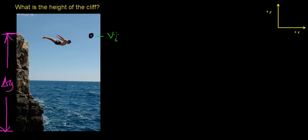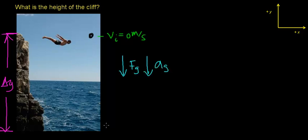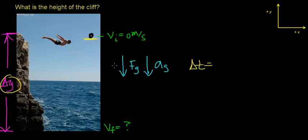What you want to do is release this object from rest, because you want to know what the object's initial velocity is. The force of gravity is going to accelerate this rock in the downward direction, increasing its velocity. The thing we're not going to know is what the object's final velocity is right before it hits the ground, although we can calculate it. In order to measure the height of the cliff, we need to know the time it takes for this rock to go from way up here to hitting the water. Let's say it takes about two seconds.